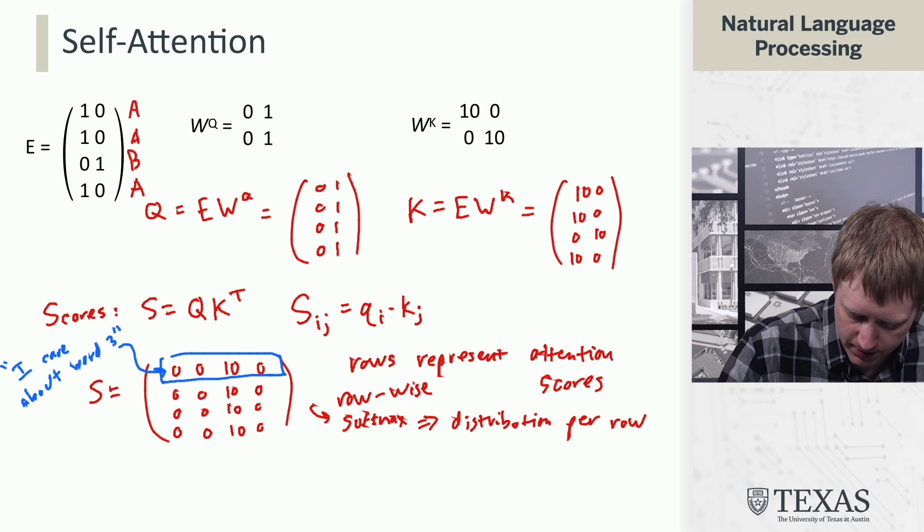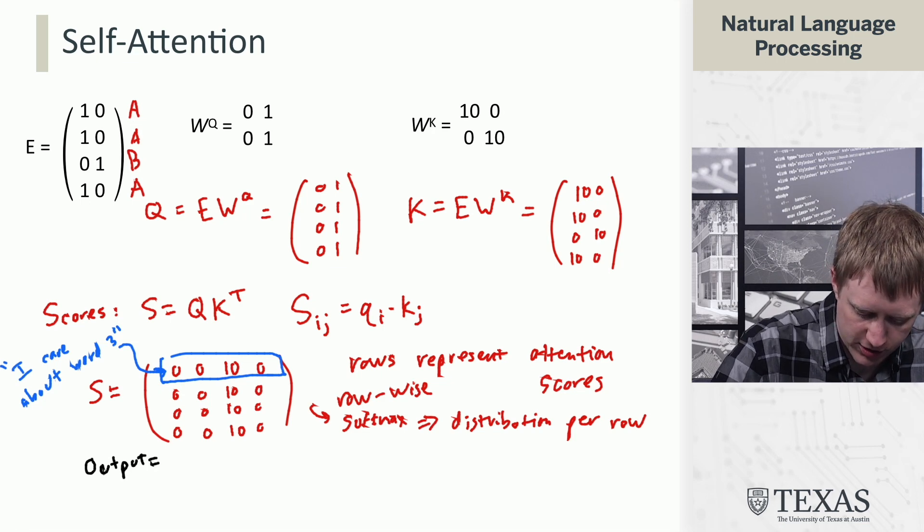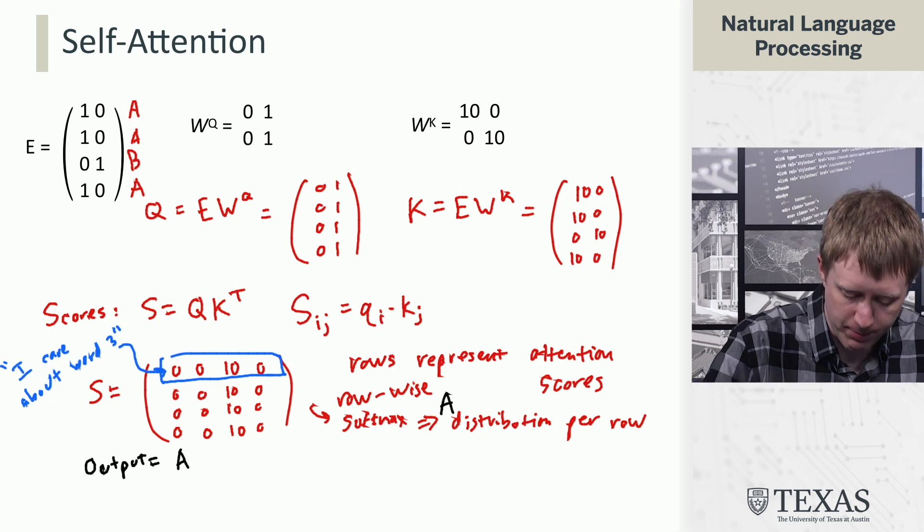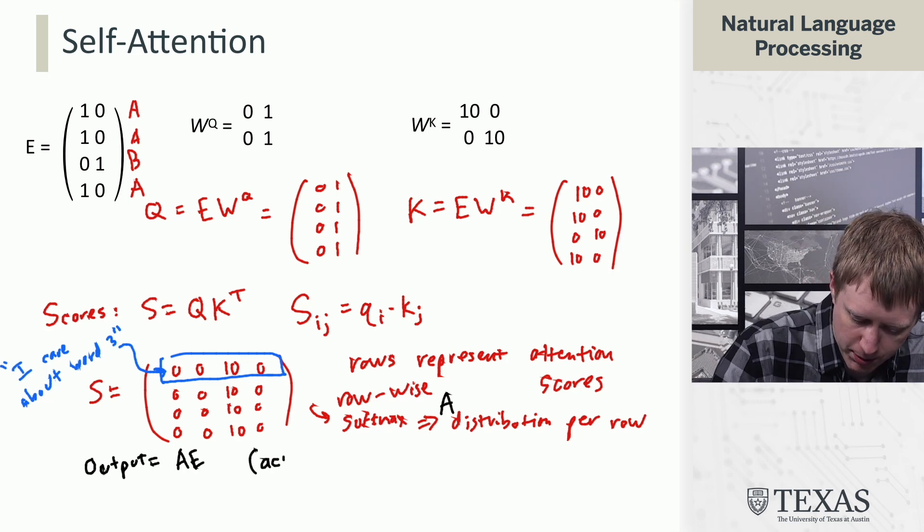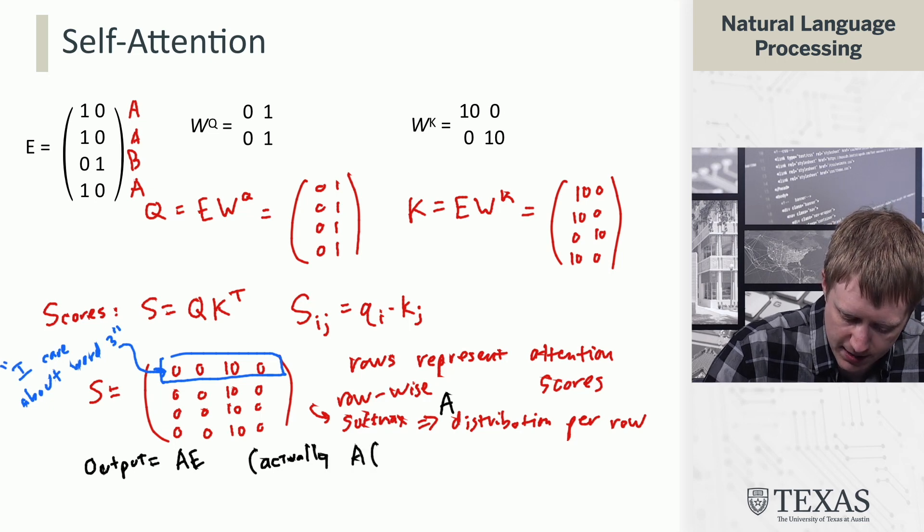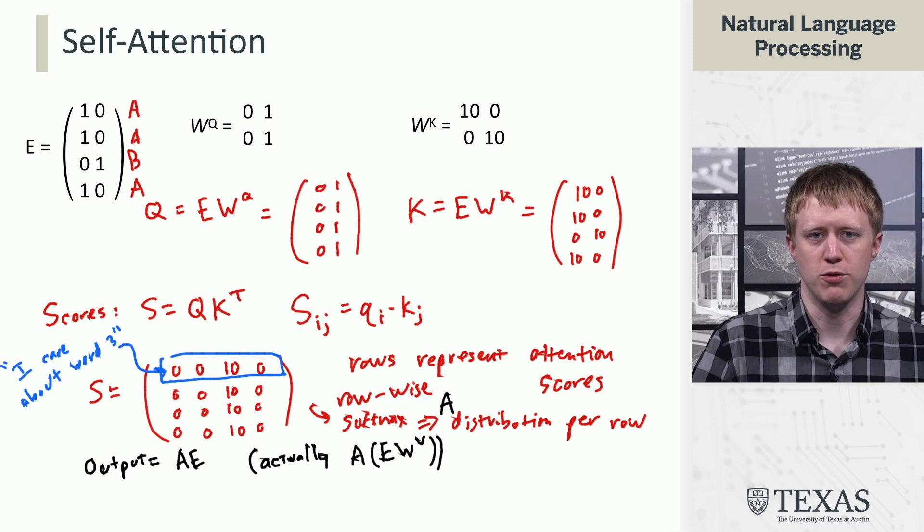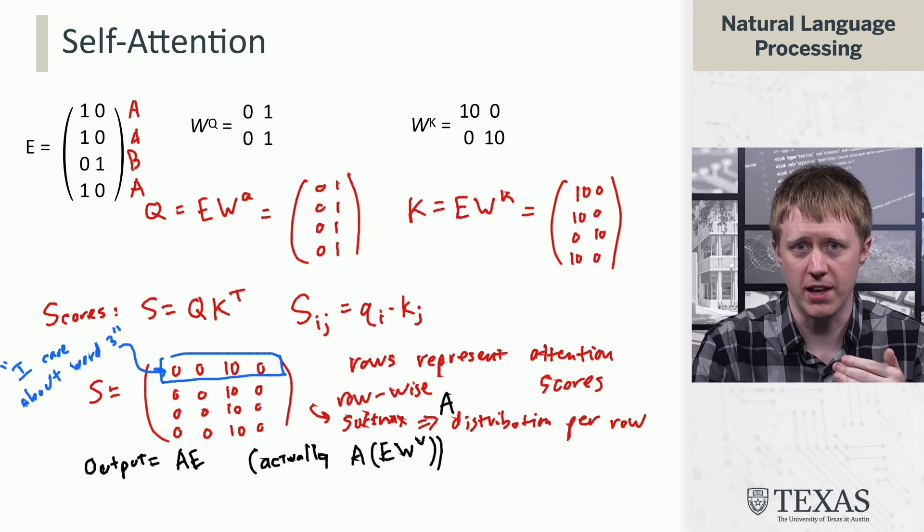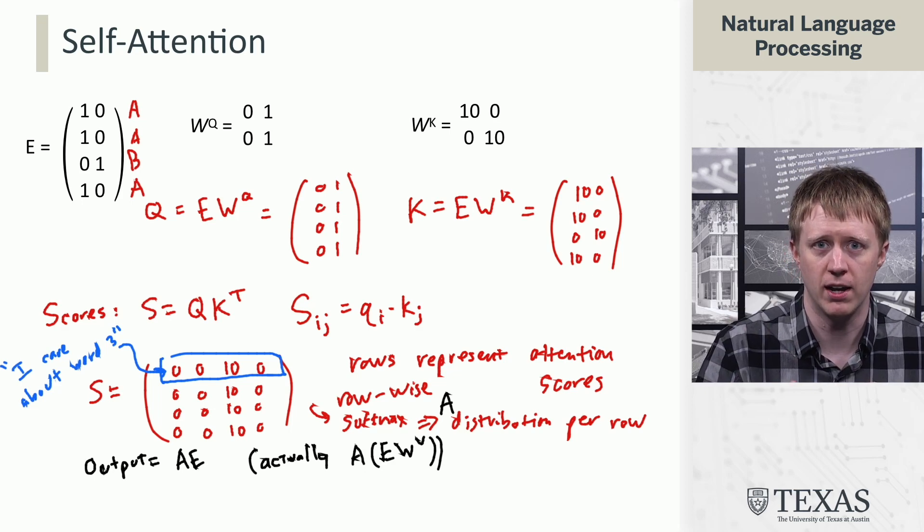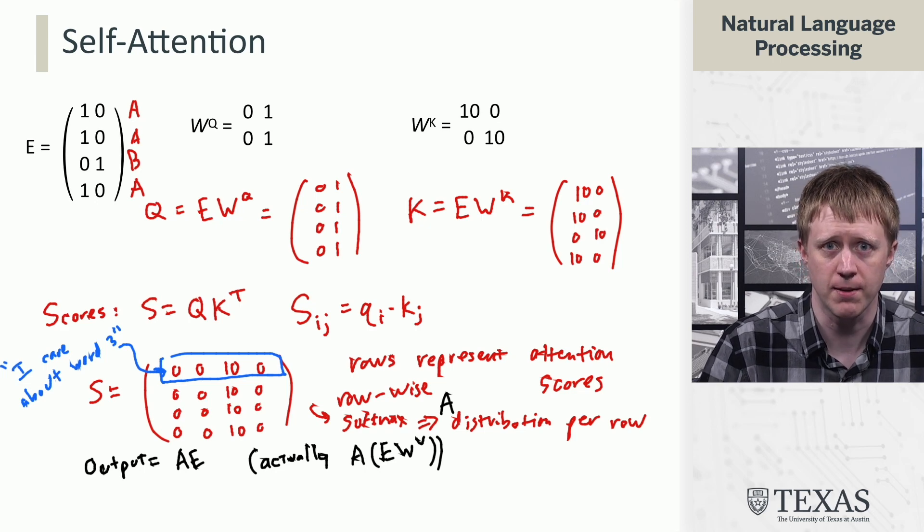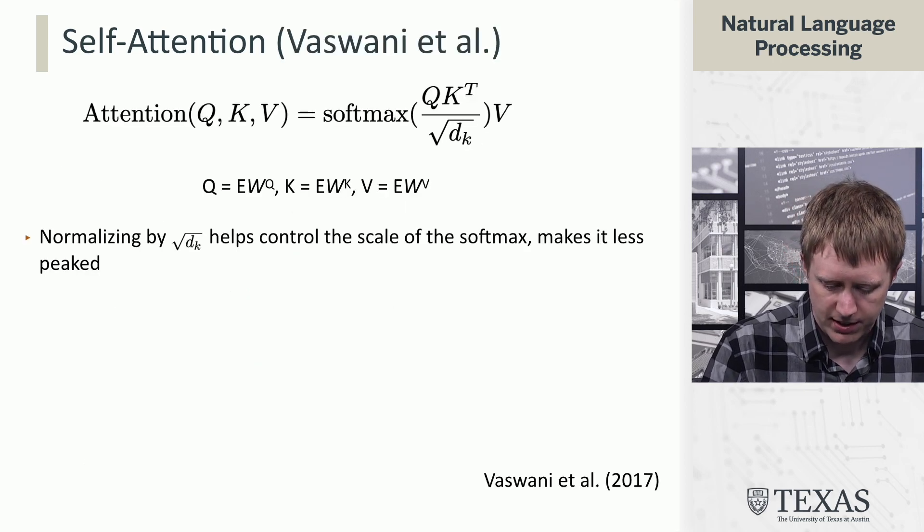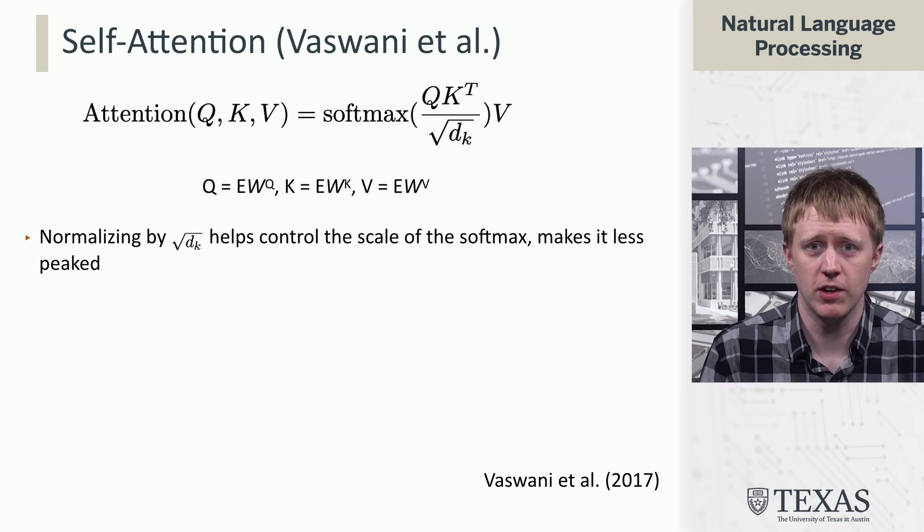The final step here is we compute the output, which is just going to be this matrix A, which is formed through the softmax, times E. I'm going to put a little asterisk here, which is that this is actually going to be A times E times WV. We're going to use a separate so-called values matrix to transform the embeddings before we multiply them and take this weighted sum with the probability matrix here, the attention matrix A.